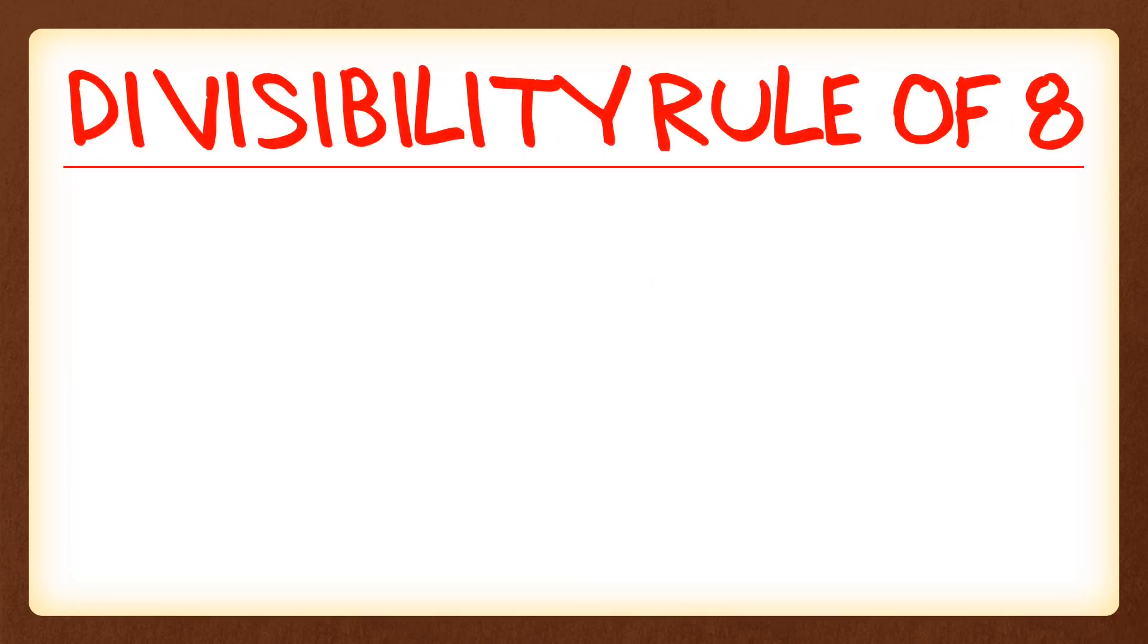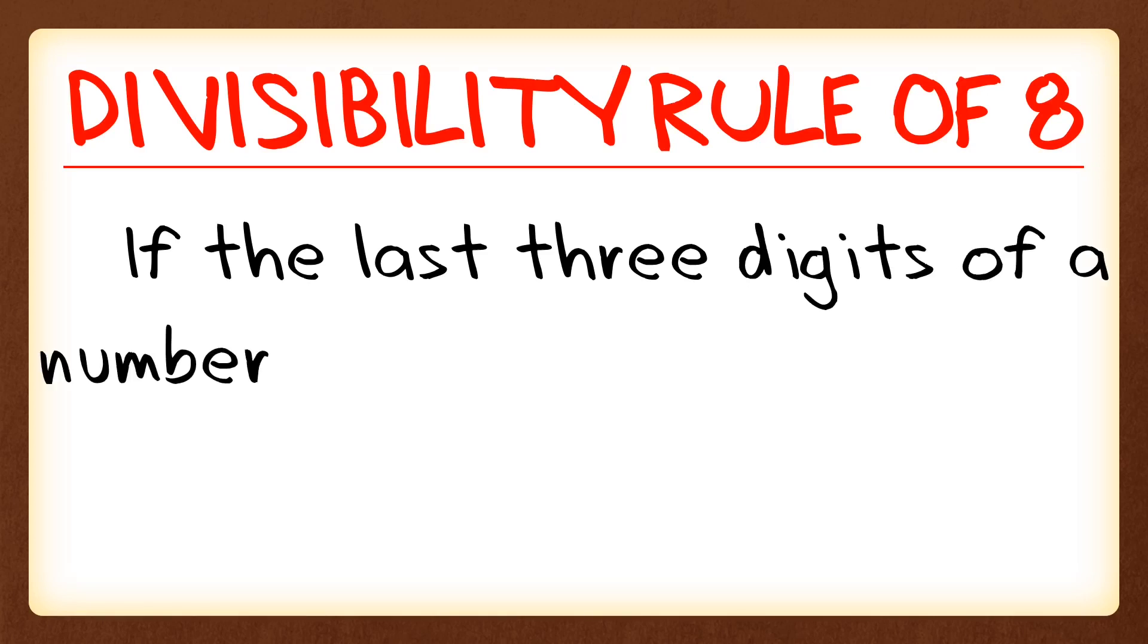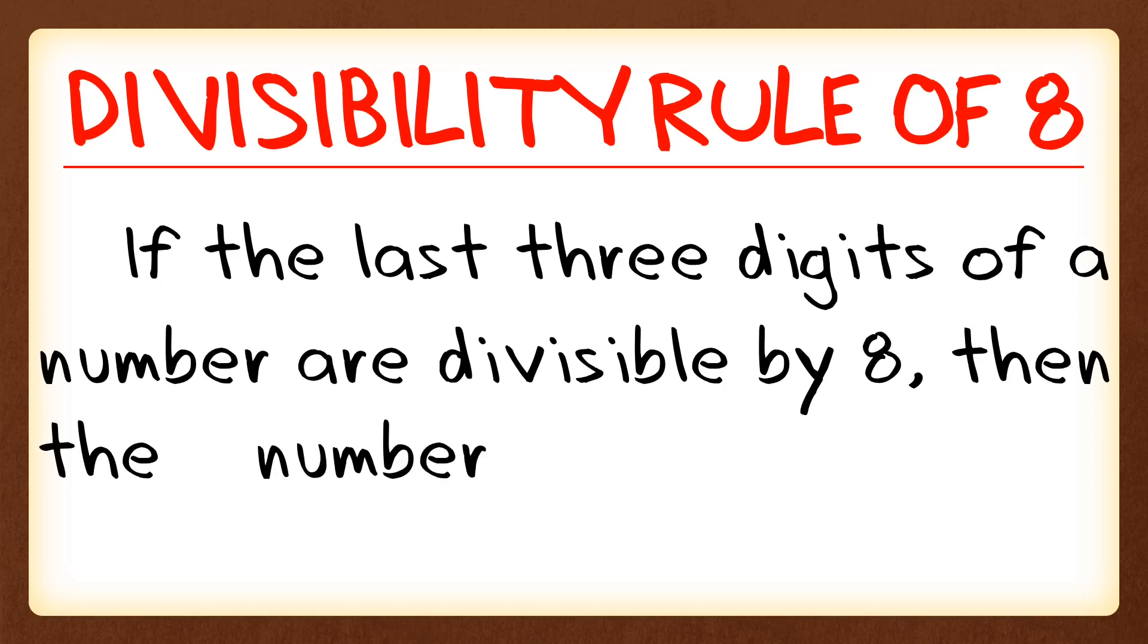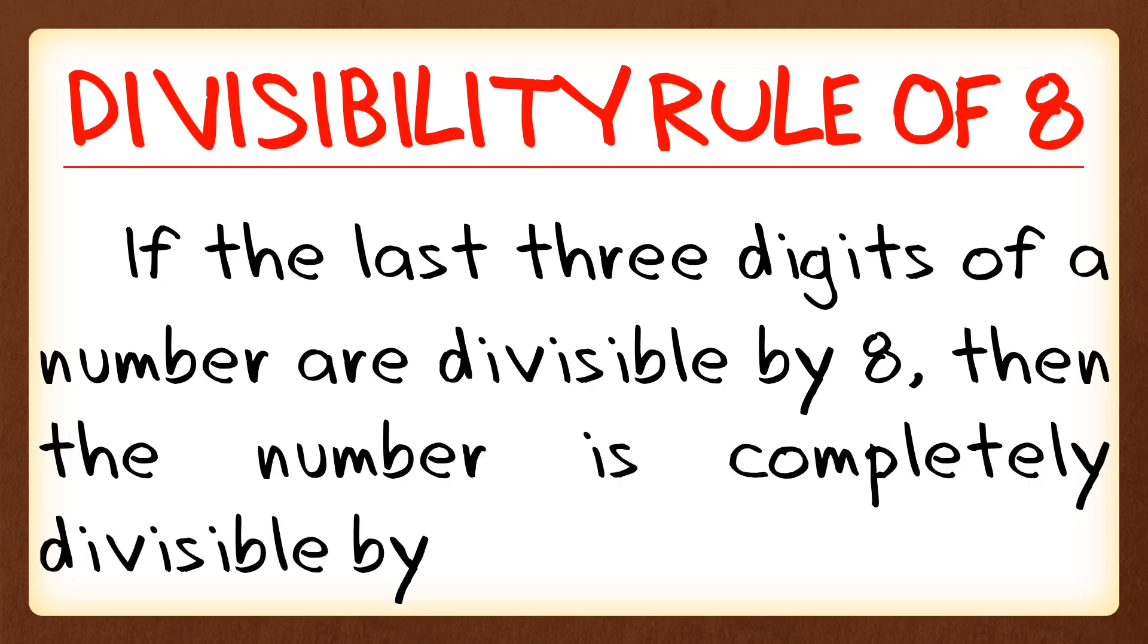So in this video, we're going to learn and understand the divisibility rule of 8. In the divisibility rule of 8, if the last 3 digits of a number are divisible by 8, then the number is completely divisible by 8. So in this rule, we're going to look at the last 3 digits and determine if it is a multiple of 8.